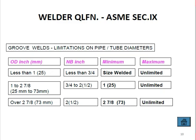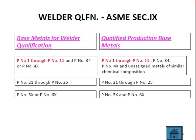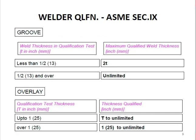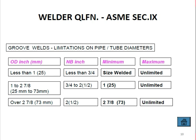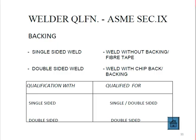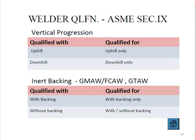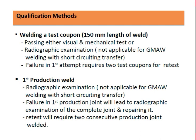This presentation covered the basics of welder qualification per ASME Section 9, including P-number, F-number, group number, qualification requirements, and qualified ranges. Further detail on welder qualification will be provided in upcoming videos. Thank you for watching — please share and subscribe to continue watching.